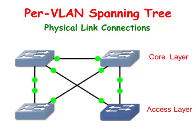We are looking at the physical topology of four switches connected to each other. The top switches are core layer switches and the bottom switches are access layer switches. One technique used by network administrators is to divide a network into at least two VLANs and then send network traffic from one VLAN in both access layer switches to a specific core layer switch.